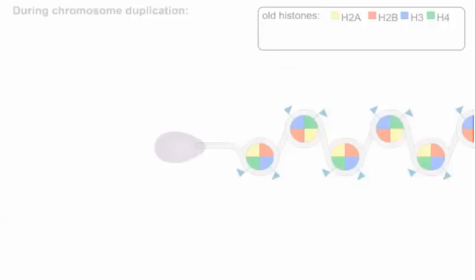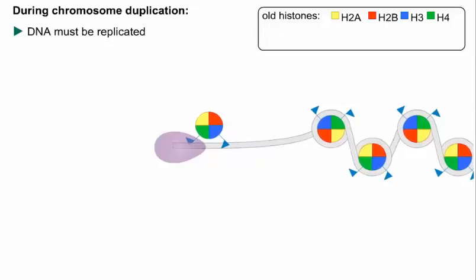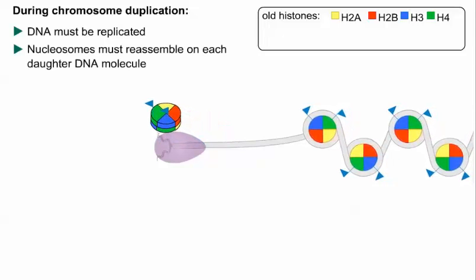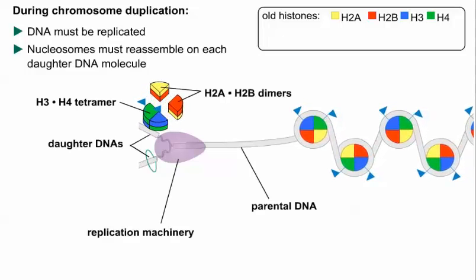When chromosomes are duplicated, the DNA must be replicated and the associated proteins must reassemble on each daughter DNA molecule. During replication, the nucleosomes must be at least partially disassembled to allow the replication machinery to pass.